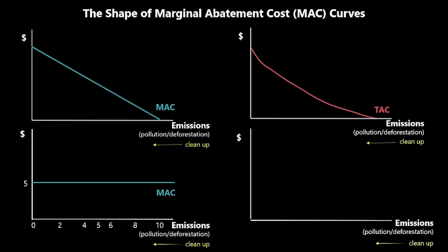One option for a marginal abatement cost curve is that it's constant. What you can see here is that the marginal abatement cost — the cost of cleaning up each additional unit of pollution — is $5, no matter what emission level we're at.